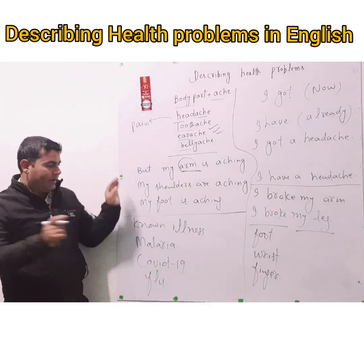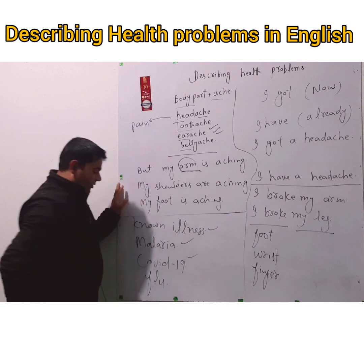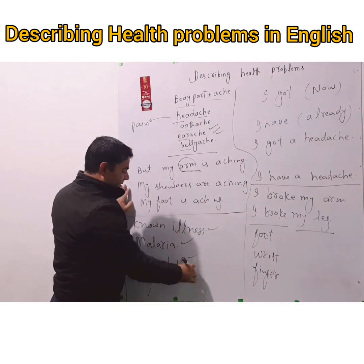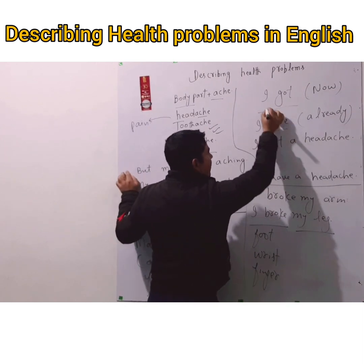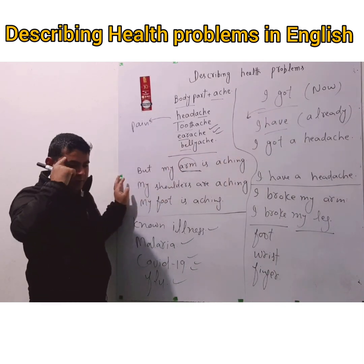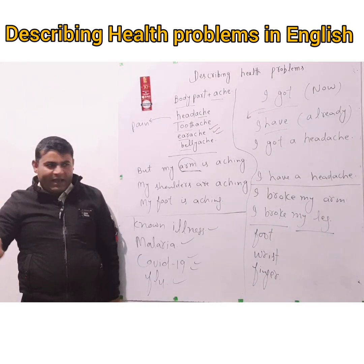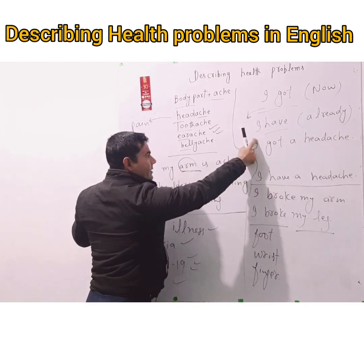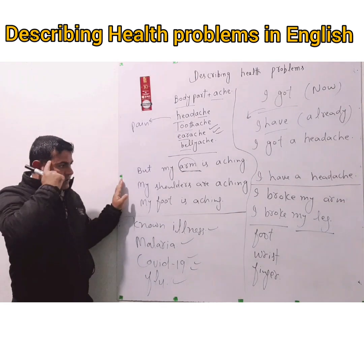For well-known conditions that have a medical name — like malaria, COVID-19, or flu — you simply say 'I have malaria,' 'I have COVID-19,' 'I have flu,' because they already have names. The difference between 'I got' and 'I have': 'I got a headache' means you just got that problem — for example, the class is noisy and you just developed it. 'I have a headache' means you are already suffering from that problem.